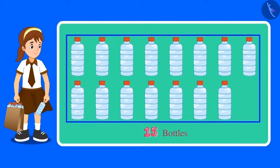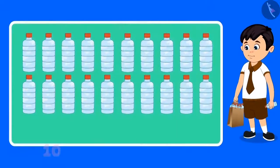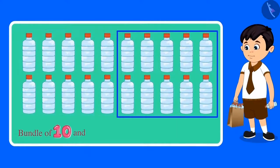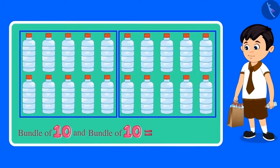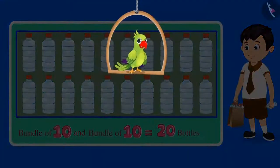Now let's count the number of bottles that Chotu has collected. This is one bundle of 10 bottles, and this is another bundle of 10 bottles — these are two bundles of 10, so these are 20 bottles. This means that Chotu has collected a total of 20 bottles.